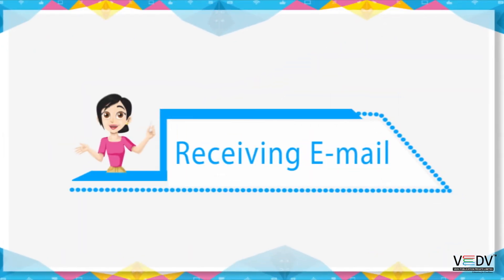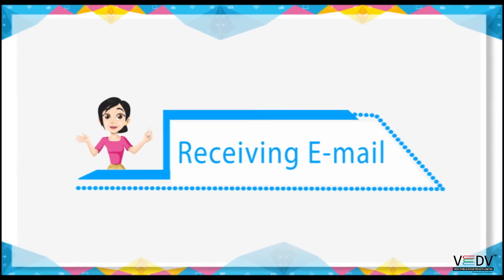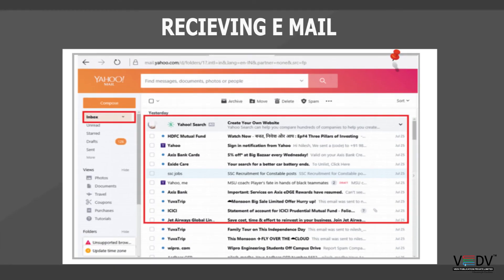Receiving email: Click on Mail or Inbox. This will display all of your received messages. Double click on a message to read it. Once you read the message, it converts into normal font from bold font.